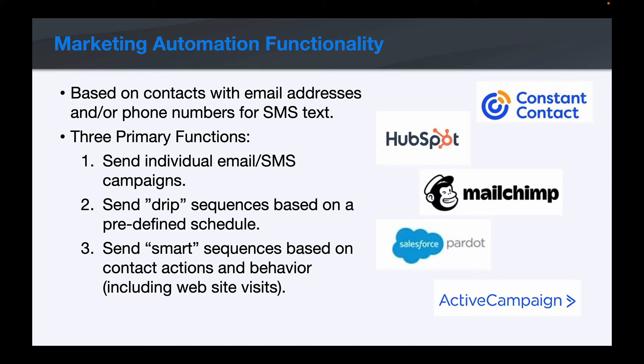Before we jump into that, I want to quickly define what marketing automation functionality is all about. Marketing automation is based around starting with a contact where you have an email address, or you may also have a phone number that you could potentially use for texting or SMS messages. But it's all very contact-centric.